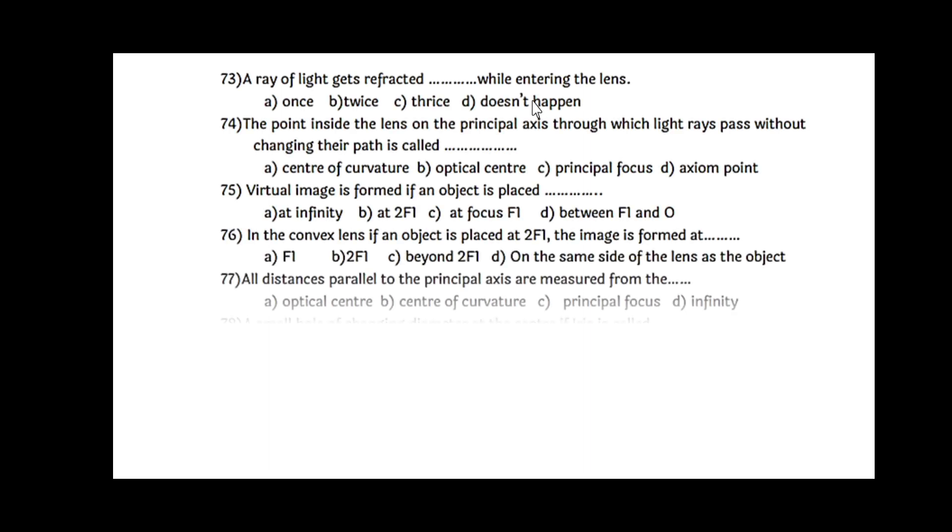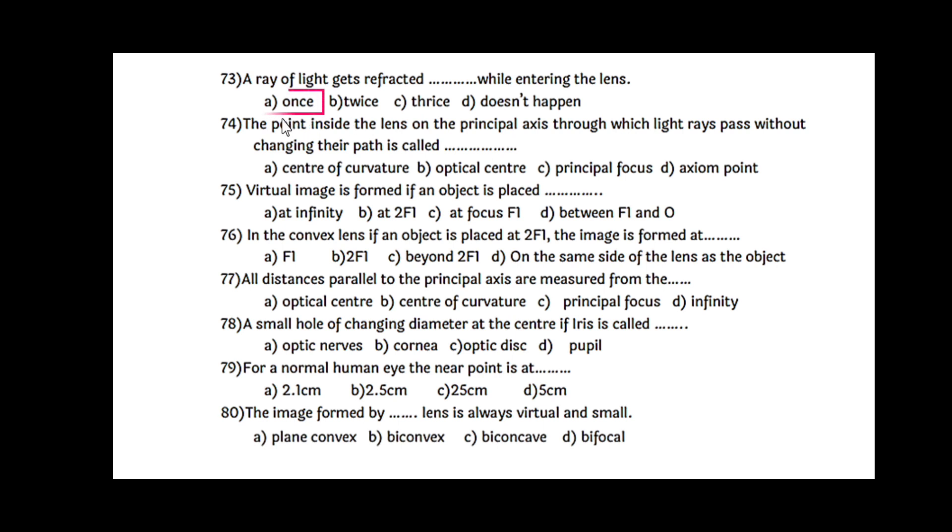A ray of light gets refracted while entering the lens once only. The point inside the lens on the principal axis through which light rays pass without changing their path is the optical center. Virtual image is formed if an object is placed between F1 and O, that is the principal focus and the optical center. In the convex lens, if an object is placed at 2F1, the image is formed at 2F1 only. All distances parallel to the principal axis are measured from the optical center.